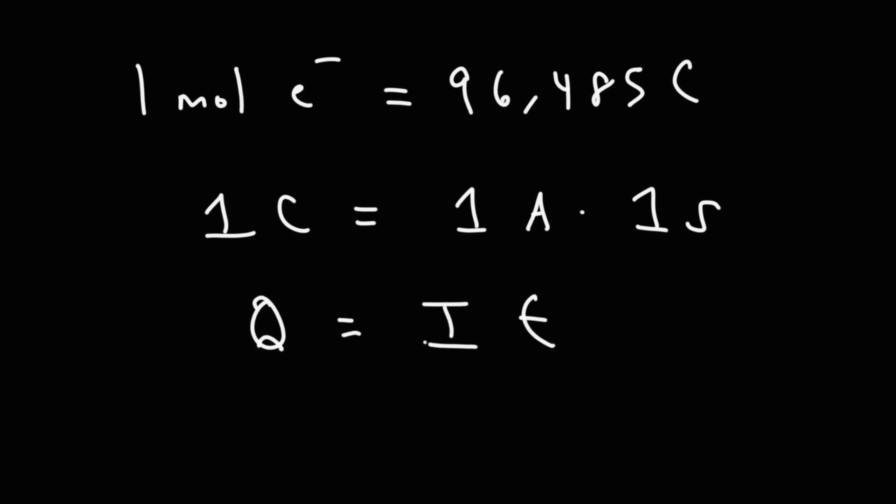Now when dealing with electroplating, there are some conversion factors you want to be familiar with. Based on Faraday's constant, one mole of electrons is equal to 96,485 coulombs. And you need to know that one coulomb is equal to one amp times one second. This is based on the equation Q equals IT, so Q is the charge with the units in coulombs, I is the electric current with the units in amps, T is the time in seconds.